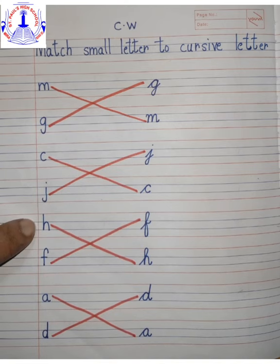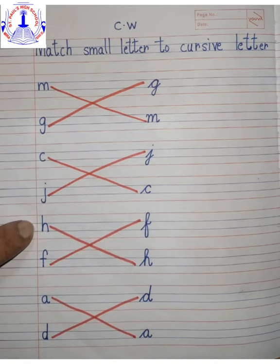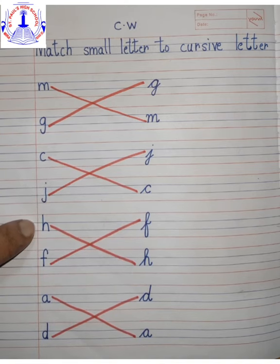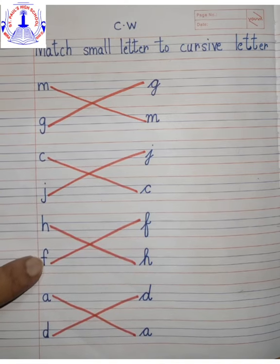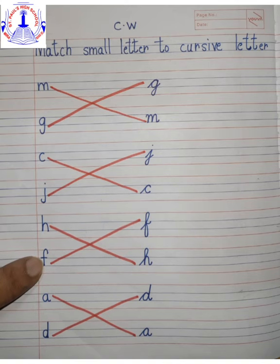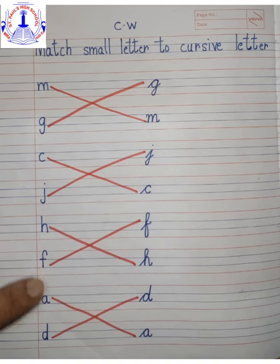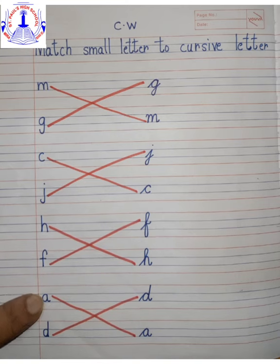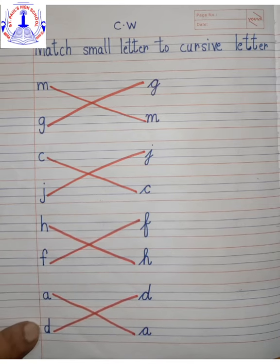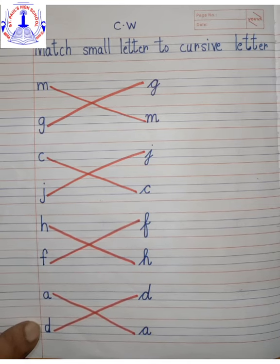H says h — hat. F says f — fish. A says a — apple. D says d — door.